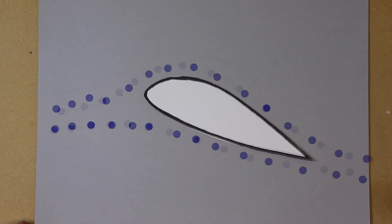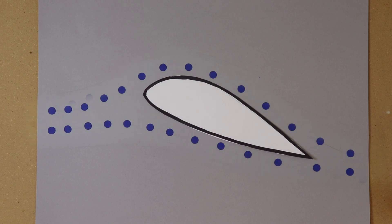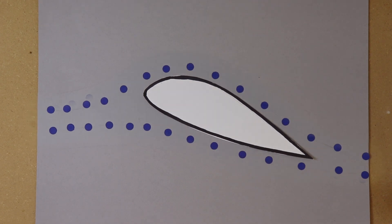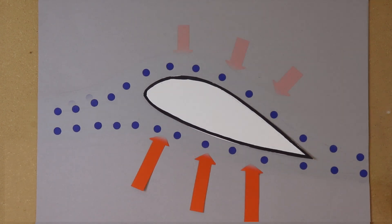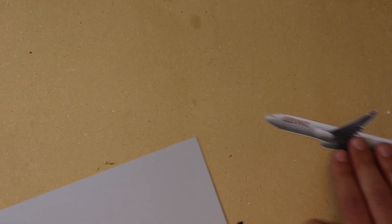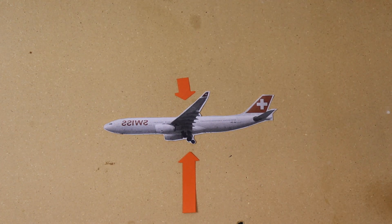Then we saw how the shape of an airplane wing forces the air on top to move faster, and this creates more pressure on the bottom of the wing than on the top of the wing, and that's what pushes the airplane into the sky.